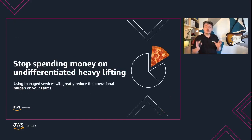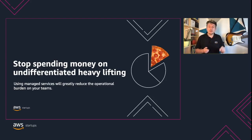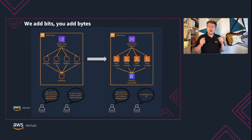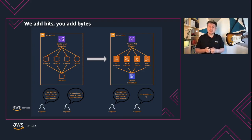One of my favorite principles is stop spending money on undifferentiated heavy lifting. AWS does the heavy lifting of data center operations like racking, stacking, and powering servers, which allows you to focus on your customers and business projects rather than on IT infrastructure. Of course you can build your own database on an EC2 instance, but the effort involved in managing the cluster is effort that you and your team could invest somewhere else. Using a service like RDS will allow you to focus on adding value to the business instead of spending time on patching instances.